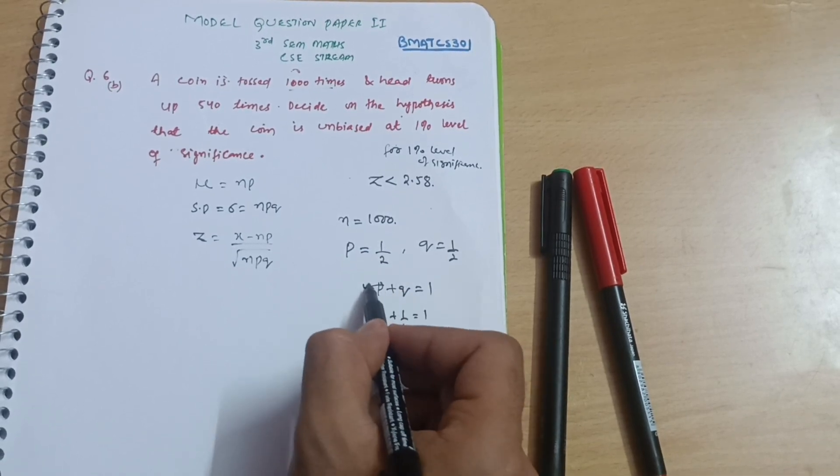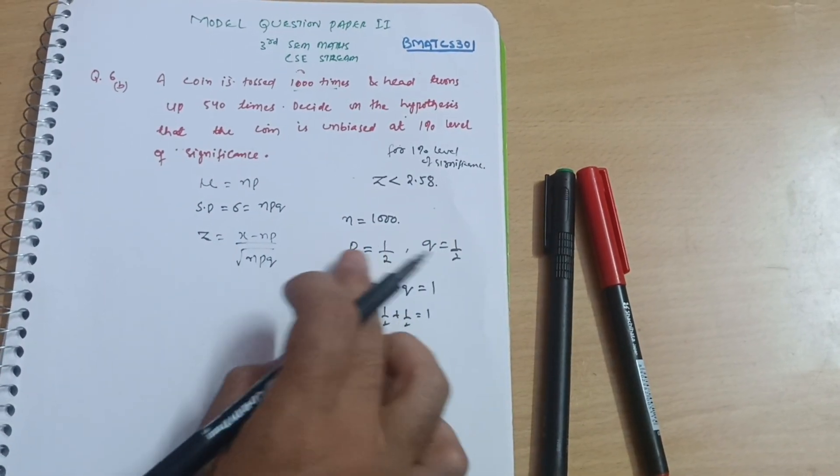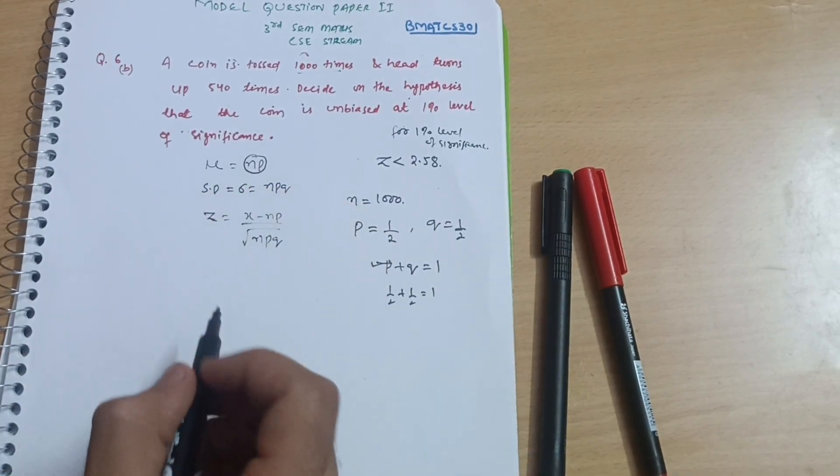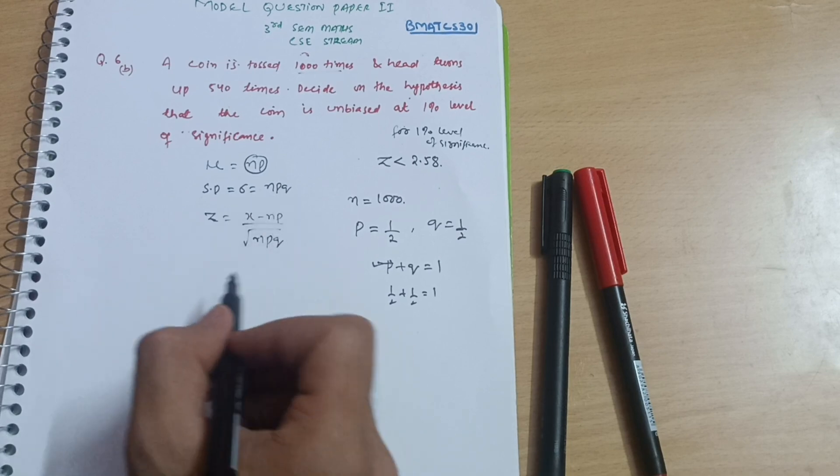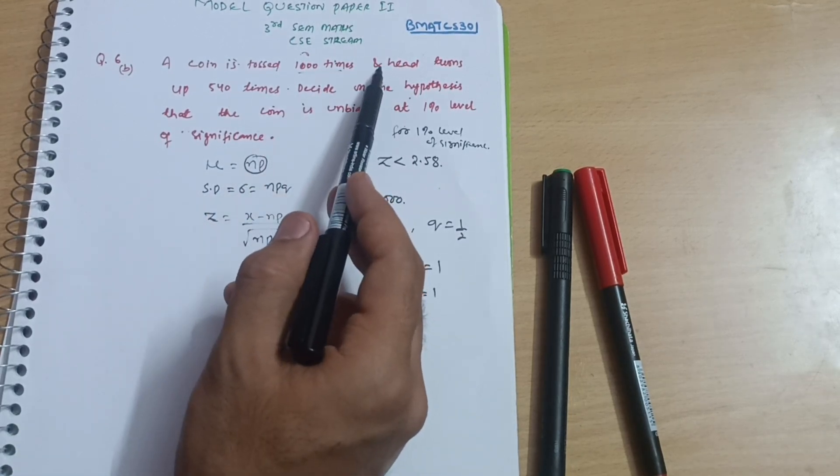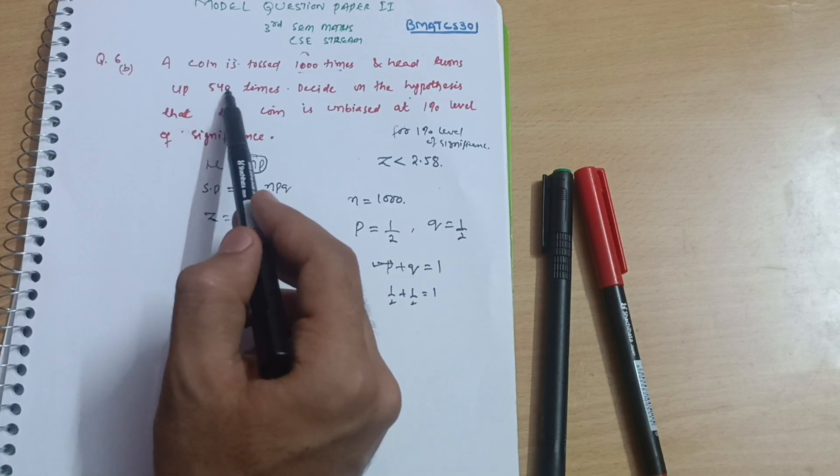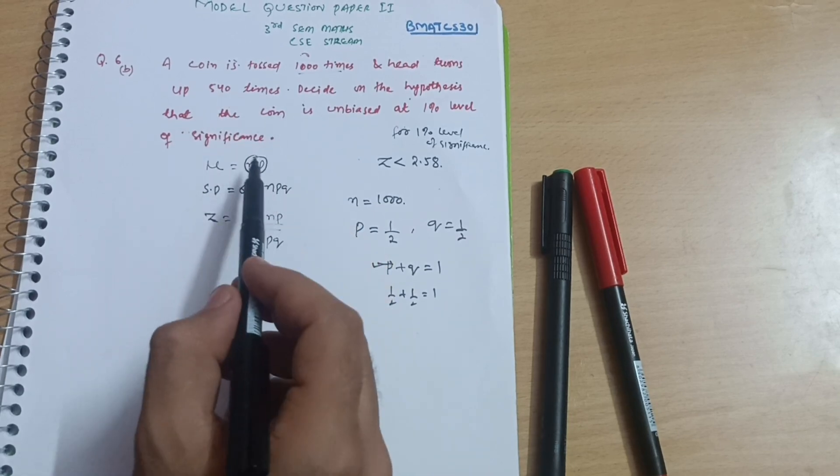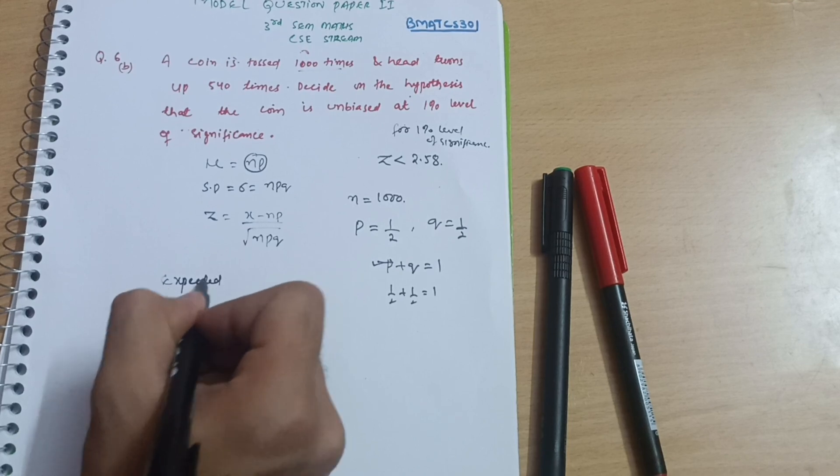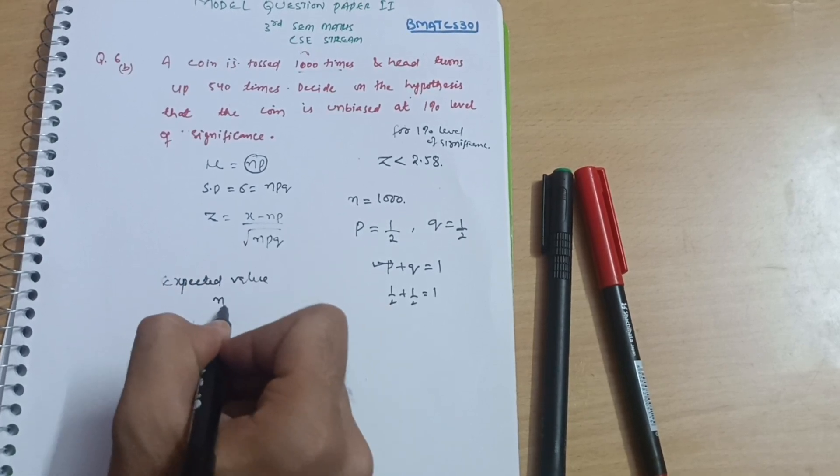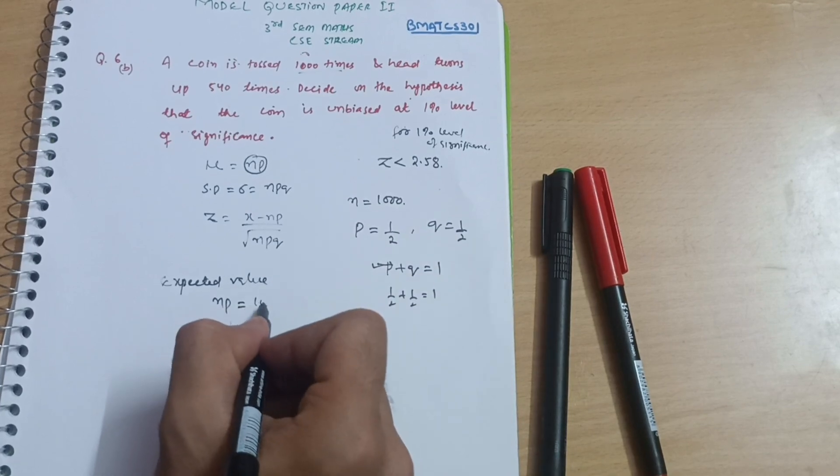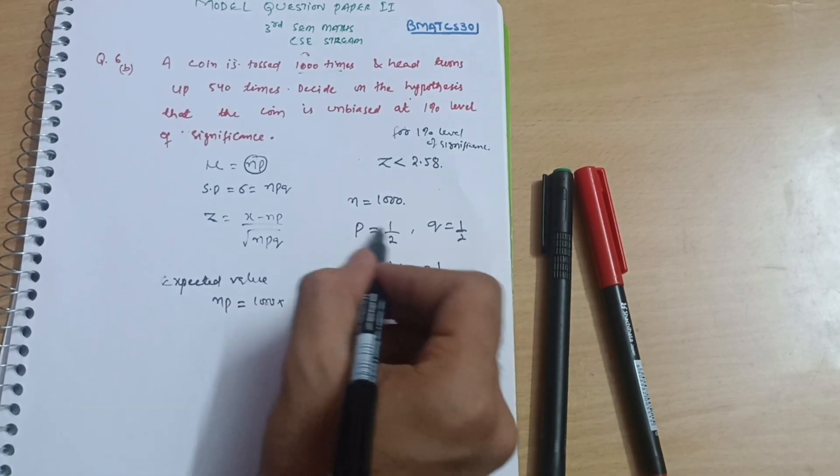Now we have calculated p and q. This np, as I told you in most of the videos, is the expected value. First of all we should calculate this expected value. In the question it says head turns up 540 times, but let's calculate first the np expected value.